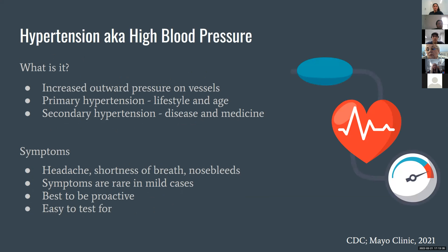Now I'll talk about hypertension, more commonly known as high blood pressure. Hypertension is an increased outward pressure on the blood vessels. Normally, the expected blood pressure is around 120 over 80. Hypertension can be classified as anything greater than 130 over 90 or 140 over 100, depending on which doctor you talk to. Primary hypertension often comes about as a result of certain lifestyles and age — maybe diet or exercise choices. Secondary hypertension is more frequently a result of specific diseases or side effects of a certain medication.